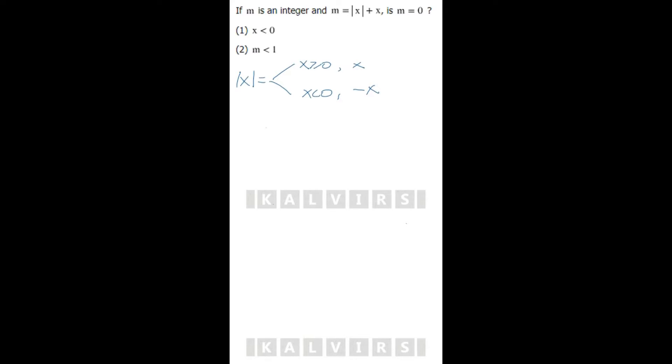The question says m equals absolute value of x, which is x when x is positive, plus x. This is when x is positive or zero. So m will be 2x when x is positive or zero.